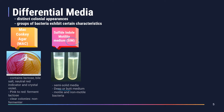Another example of differential media is the sulfide indole motility medium (SIM), a deep or butt semi-solid medium with 0.4% agar. It is used to differentiate motile from non-motile bacteria — the tube on the left shows motility, the tube on the right shows non-motility. SIM is useful for identifying Klebsiella and Shigella species, which are the only non-motile organisms of the family Enterobacteriaceae. It is also useful for identifying Yersinia, which is non-motile at 37°C and motile at 22°C.